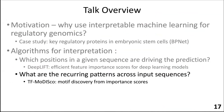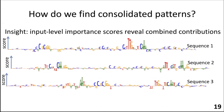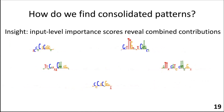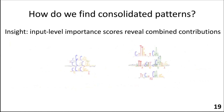The idea in TF-MoDISco is to start with input-level importance scores derived by backpropagating through the entire network — a readout of how important each base is to the entire network working as a whole. You then segment regions of high importance (called 'seqlets'), cluster these segments into those that look similar, and aggregate the segments within each cluster to get consolidated motifs.